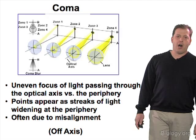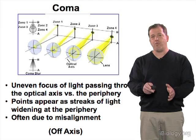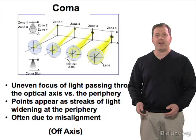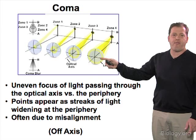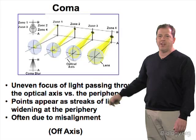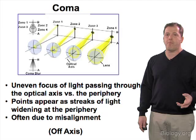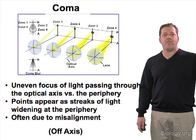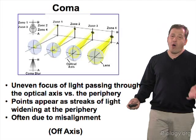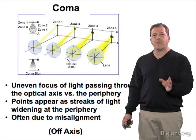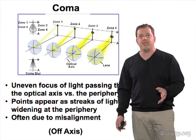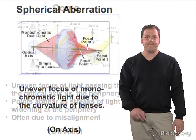Coma is an uneven focus of light as it passes through the periphery versus the axis of the lens, similar to spherical aberration but more of an off-axis illumination property. Light passing through the center goes to one zone, while light through the peripheral areas goes into different zones. It appears in the microscope as a streak or comet — a point of light with a tail streaking toward the periphery. It is often due to misalignment in the optical system, so if you're seeing coma, make sure your microscope is completely and methodically aligned so that everything is on axis.